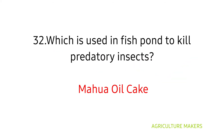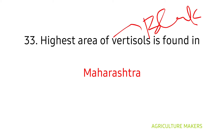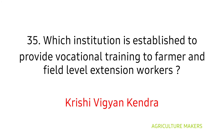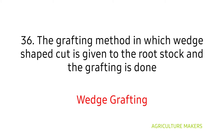Mahua oil cake at the rate of 2500 kg per hectare is used in fish ponds to kill predatory insects. High shrinkage of Vertisols is found in black cotton soil, which is found in Maharashtra. The pan-India portal for online trading of agricultural commodities is e-NAM. KVK (Krishi Vigyan Kendra) was established in 1974 to provide vocational training to farmers and field-level extension workers — this is an important topic. The grafting method in which a wedge-shaped cut is given to the rootstock is called wedge grafting.